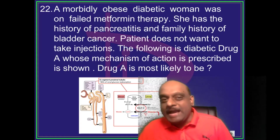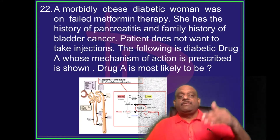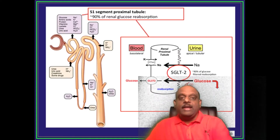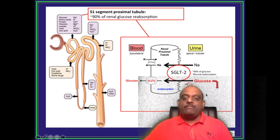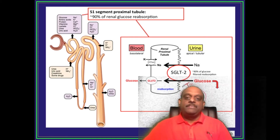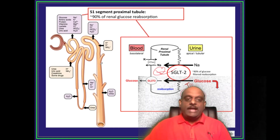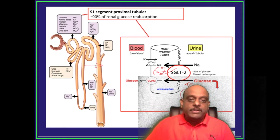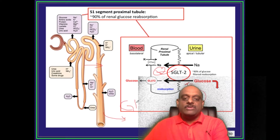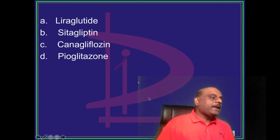A morbidly obese diabetic woman was on failed metformin therapy. She has a history of pancreatitis, family history of bladder cancer, and does not want to take injections. She was given a diabetic drug. The drug acts on the SGLT2 receptor, inhibiting SGLT2 so that proximal tubular reabsorption of glucose is inhibited, causing glucosuria. What is this drug?